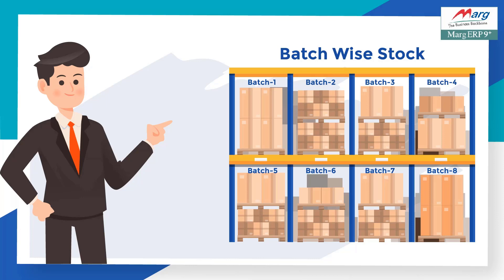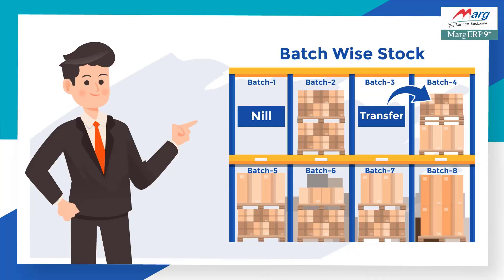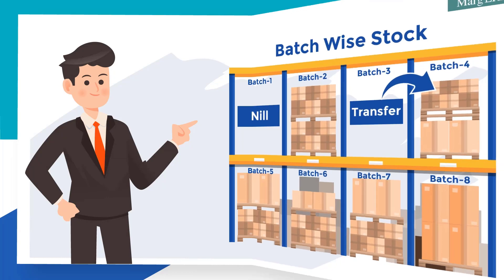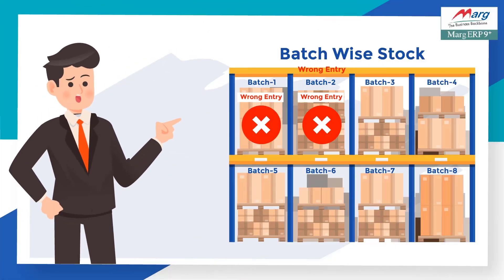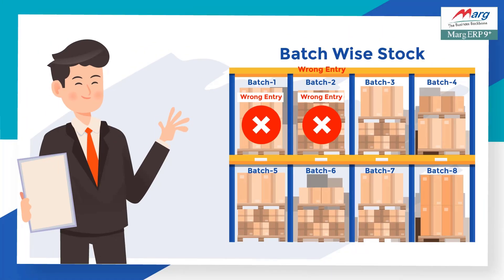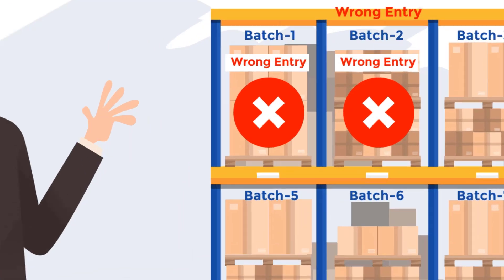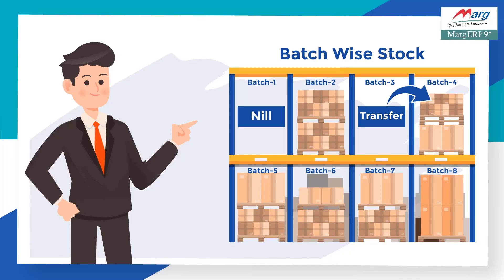You can also edit nil and transfer the item of any bad stock as per your requirement. For example, if you have entered an item in the wrong batch, or you want to transfer any bad stock to another batch, in all these cases you can transfer or nil the bad stock of that item as required.